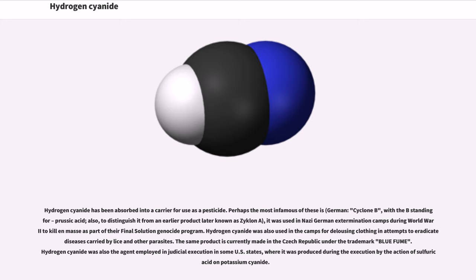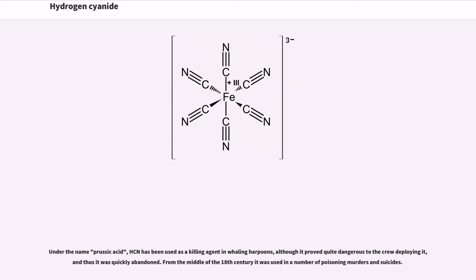Hydrogen cyanide was also the agent employed in judicial execution in some U.S. states, where it was produced during the execution by the action of sulfuric acid on potassium cyanide. Under the name prussic acid, HCN has been used as a killing agent in whaling harpoons, although it proved quite dangerous to the crew deploying it and thus was quickly abandoned. From the middle of the 18th century, it was used in a number of poisoning murders and suicides.